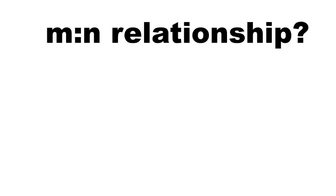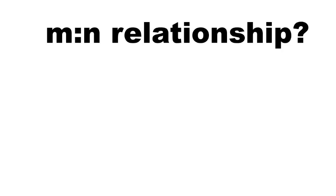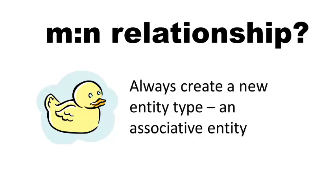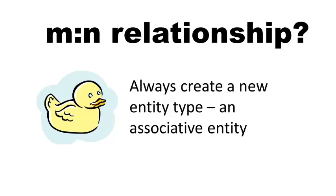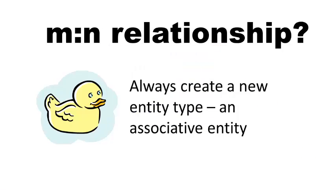When you have a many-to-many relationship, that is when associative entities crop up. When you have a many-to-many relationship, always create a new entity type. That entity type looks just like a regular entity type — there's no difference. But we call it an associative entity type, in the sense that it is an entity type created to capture associations between other entity types.